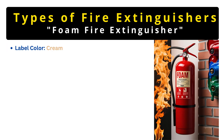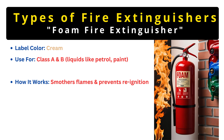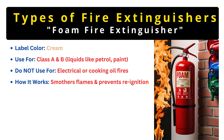Next, we have foam extinguishers, marked by their cream-colored label. These are a step up from water extinguishers because they can handle both Class A and Class B fires — ordinary materials and flammable liquids like petrol or paint. The foam smothers the fire, cutting off its oxygen supply while also cooling the fuel, making it great for things like a fuel spill fire in a garage. But foam is still mostly water-based, so don't use it on electrical fires, and it's not designed for cooking oils — that's what wet chemical extinguishers are for.